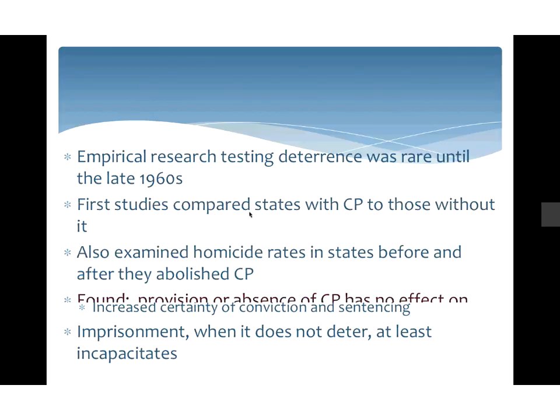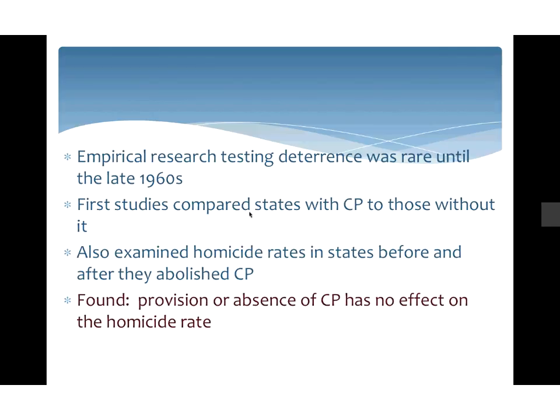This theory wasn't really tested until around the late 1960s. The first studies looked at capital punishment — capital punishment is supposed to serve as a deterrence. Presumably none of us wish to be executed, so a state with a death penalty should deter killing. Researchers compared states with the death penalty to those without, and also looked at states that had abolished capital punishment comparing homicide rates before and after. Either the provision or absence of capital punishment generally has no effect on the homicide rate. In fact, states with the highest homicide rates are often states that use the death penalty a lot.